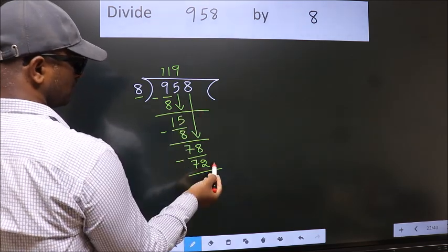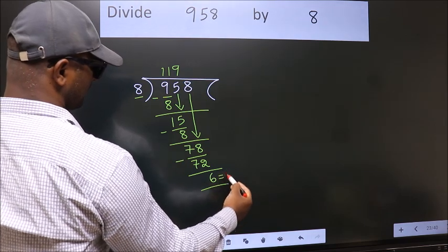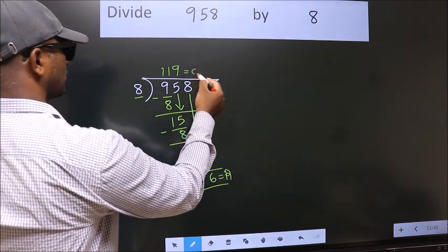No more numbers to bring it down. So we stop here. This is our remainder. This is our quotient.